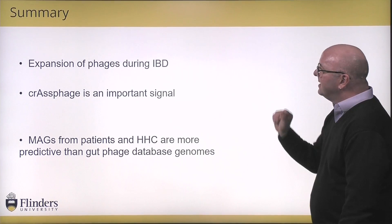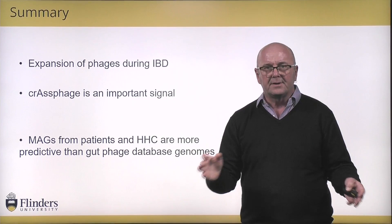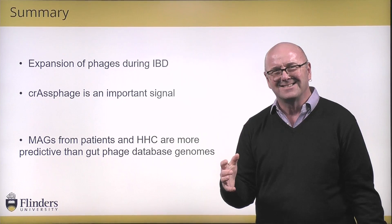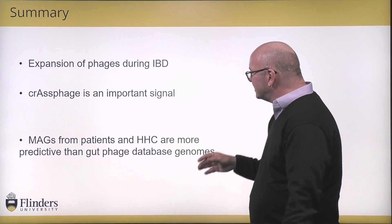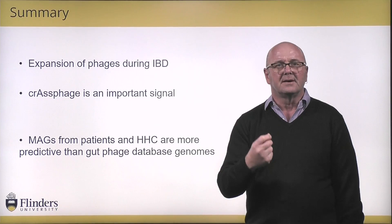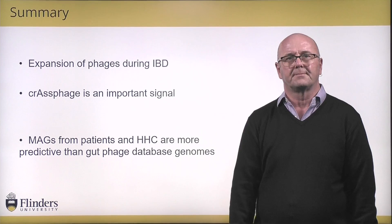So what I've told you today is that there's a massive expansion of phages during IBD. We don't yet know why that's happening — we don't know if it's a cause or an effect. I've told you that crass phage is an important signal, and that we should all be studying crass phage. And I've told you that metagenome assembled genomes from patients are much more predictive than using the gut phage database, even though it has such a vast number of phages — there's still so much we don't know.